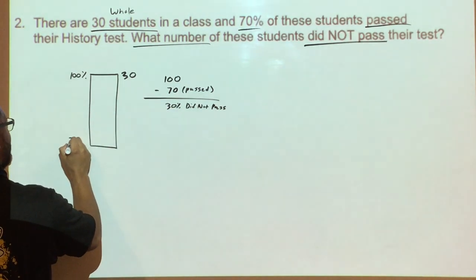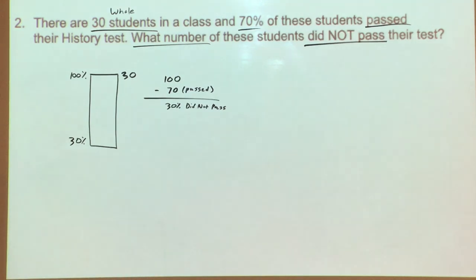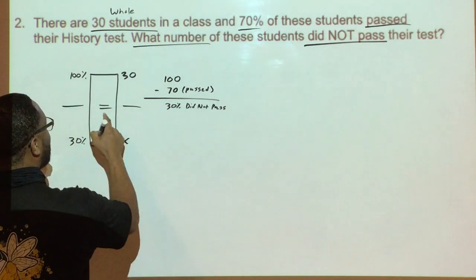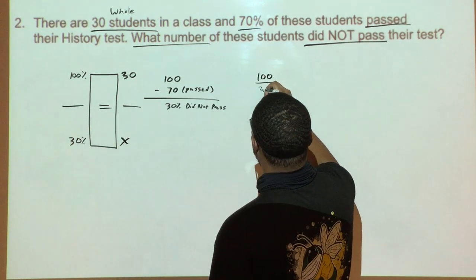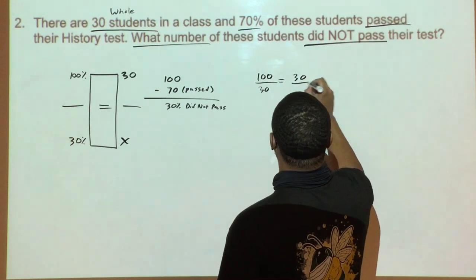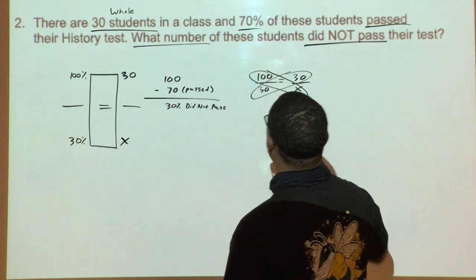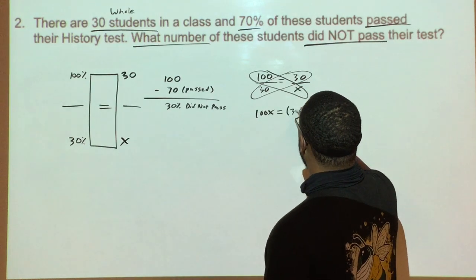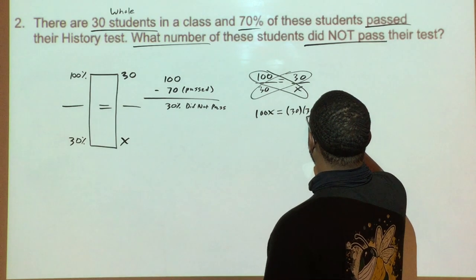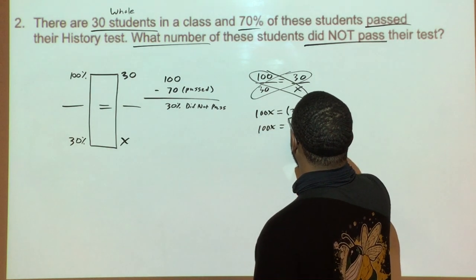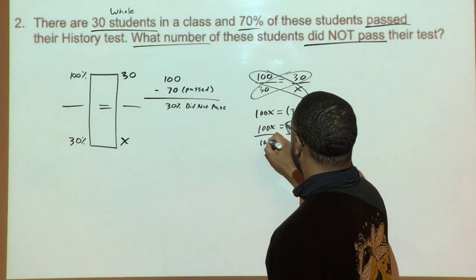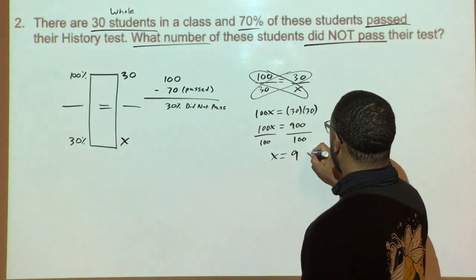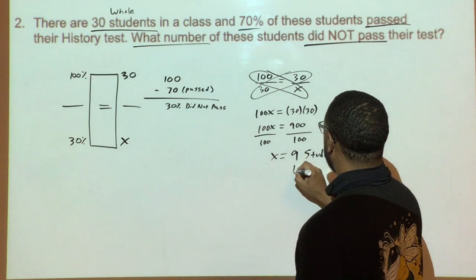I need the percent that did not pass so I can figure out the number of students that did not pass, so X goes here. My proportion is 100 over 30 equals 30 over X. Using cross products: 100 times X is 100X, and 30 times 30 is 900. So 100X equals 900. Dividing both sides by 100 gives me X equals 9. So 9 students did not pass.